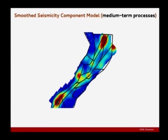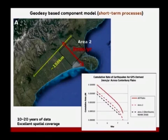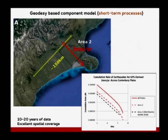The third component is geodetic information, which we've only really had for the last 10 to 20 years. We're not entirely sure what it represents over longer time scales, but currently it's used to constrain some of the other parameters. Models being developed are indicating there's a whole lot of good information in the geodetic data relevant for the next 10 to 20 years. A good benefit is the excellent spatial coverage it provides.